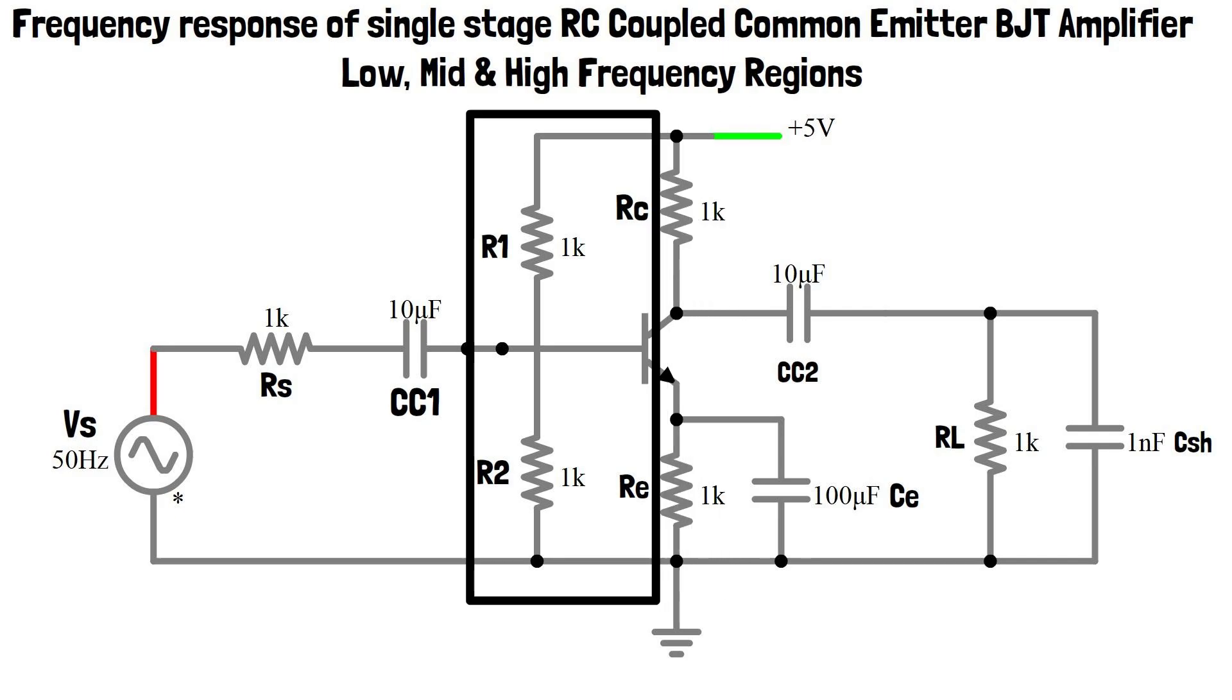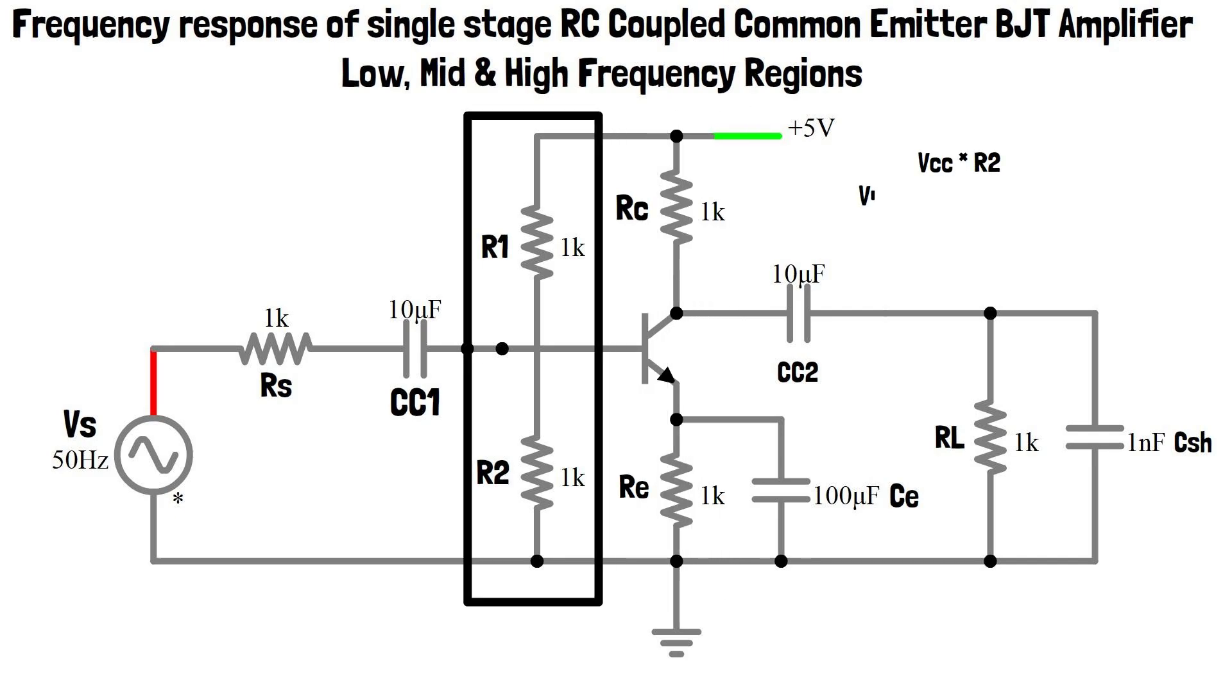R1 and R2 are called as potential divider resistors. They give Thevenin's voltage Vin equals Vcc times R2 divided by R1 plus R2, and resistance Rth equals R1 times R2 divided by R1 plus R2.